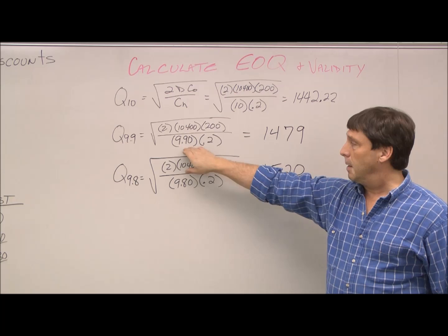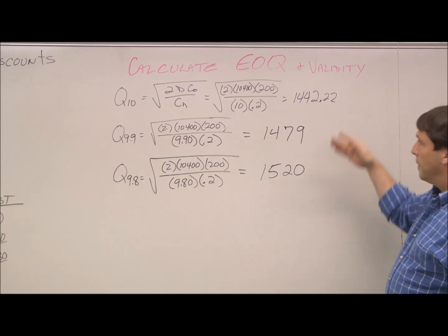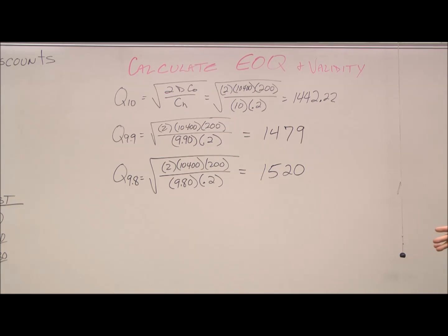Similarly, 20% of the 9.90, 20% of the 9.80. These are the results. Plug them into the calculator, find it out for yourself. So that's how we calculate the basic EOQ here.